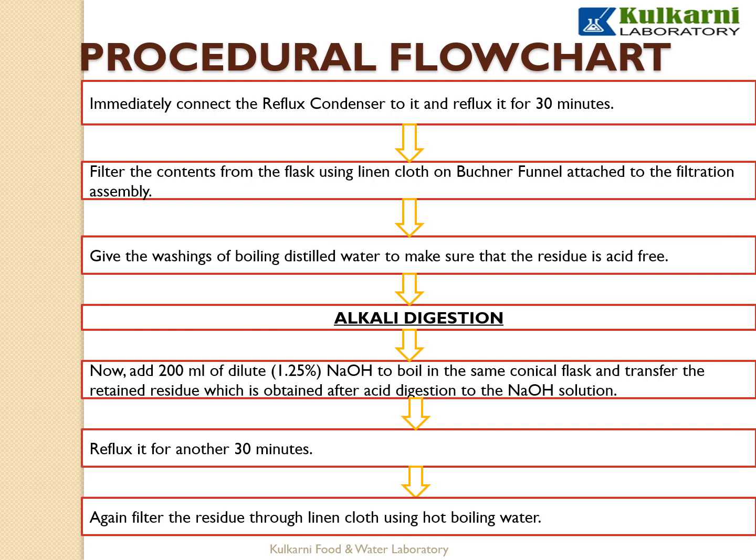Add 200ml of dilute 1.25% sulphuric acid, place the flask on the hot plate and allow it to boil. Immediately connect the reflux condenser and reflux for 30 minutes. Then filter the contents using linen cloth on the Buchner funnel attached to the filtration assembly. Give washings of boiling distilled water to make sure the residue is acid-free, checking with pH paper or litmus paper.